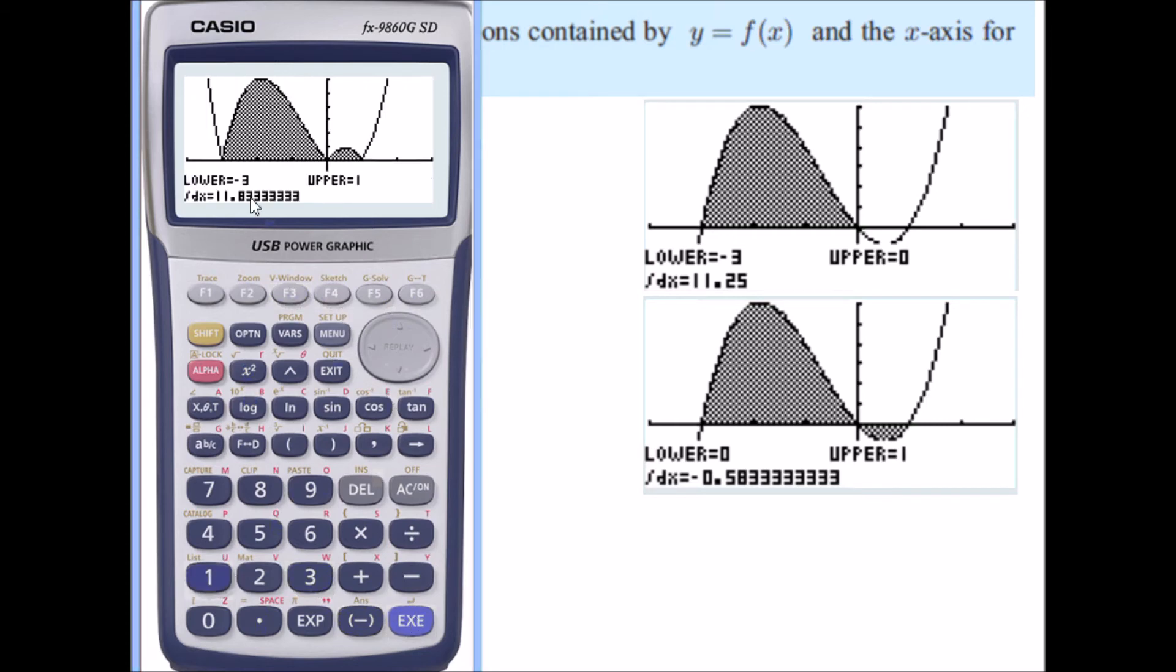And 11.8. So if we add 11.2 to 0.6 we get our 11.8 value. So that now is the area between the polynomial and the x-axis.